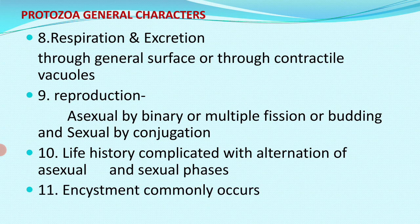The incystment process is found in these organisms. Incystment commonly occurs to avoid unfavorable conditions — these organisms form cysts around their body to survive unfavorable conditions of food, temperature, and moisture. Incystment also helps in the dispersal of these organisms.